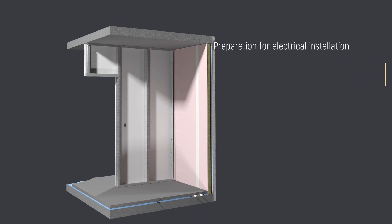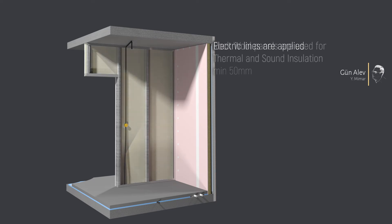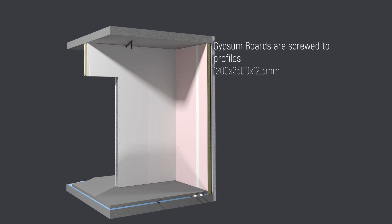Preparation for electrical installation is made. Electrical device cases are mounted and fixed with gypsum. Electric lines are applied. Rock wall panels are used for thermal and sound insulation, and gypsum boards are screwed.